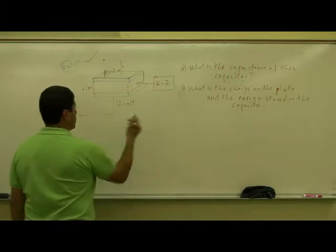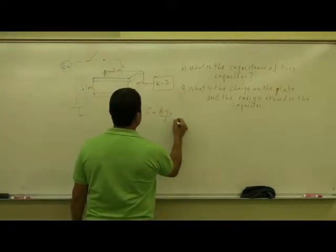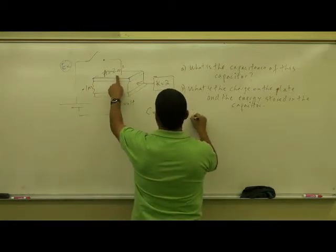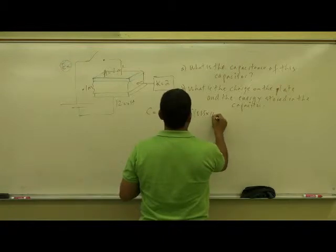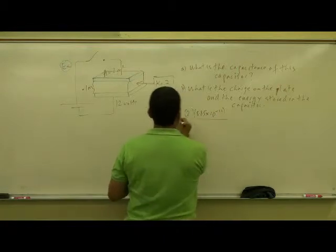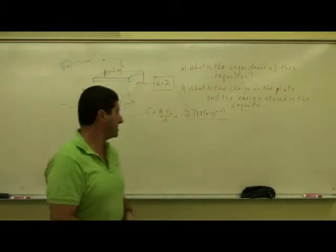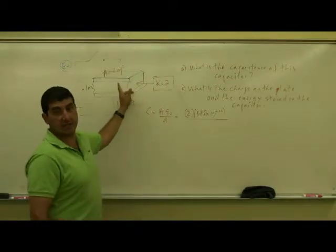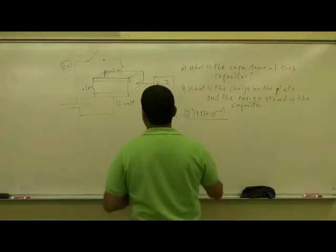So initially we solve for the capacitance A times epsilon naught over D. We put the area which was 2 meters squared. Epsilon naught is 8.85 times 10 to the minus 12. Epsilon naught is the electrical permittivity of space. So you just put that in there. We're assuming first that it is vacuum between the two plates. The distance D is 0.1.